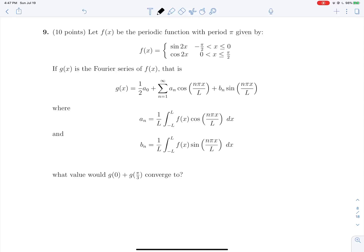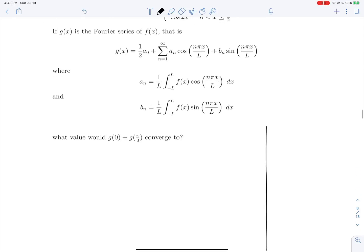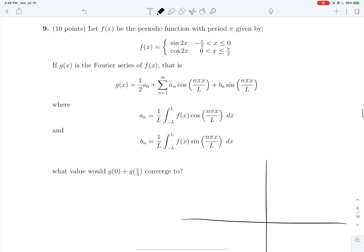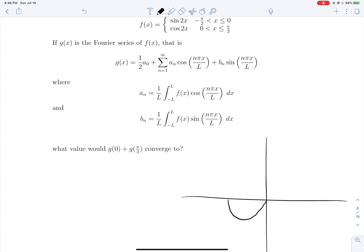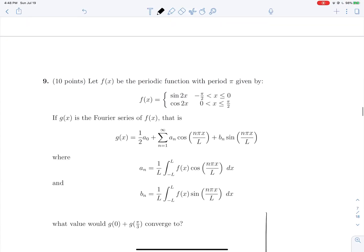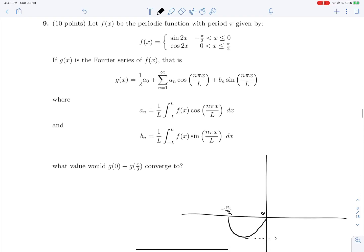Question 9. Let f(x) be a periodic function with a full period π given there. If g(x) is the Fourier series of x like so, what would the value of g(0) plus g(π/3) converge to? So like always, it's extremely important to graph this thing. We're dealing with the sine of 2x from negative π/2 to 0. So that's going to give us this kind of thing, minus π/2, 0, and it will go all the way down to negative 1. And then we have the cosine of 2x from 0 to π/2. So that will give us that kind of thing where we have 1 and negative 1 again, and this is π/2, and it intersects here at π/4.